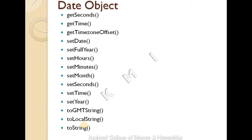getTime returns the time, and getTimezoneOffset returns the time difference between the user's computer and GMT. The set methods include setDate, setFullYear, setHours, setMinutes, setMonth, setSeconds, setTime, and setYear.